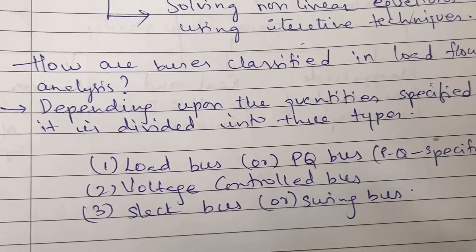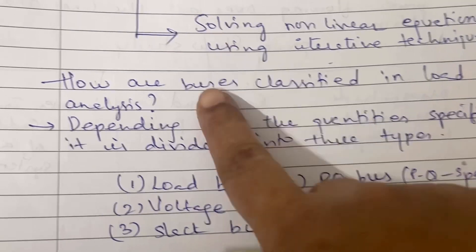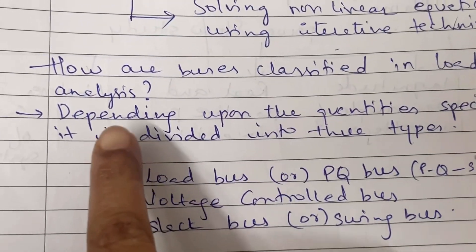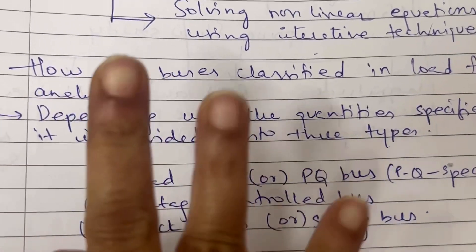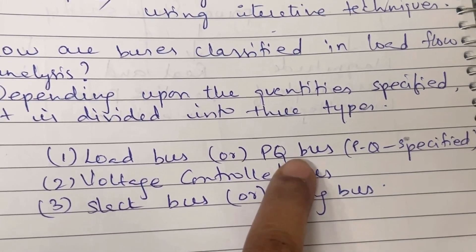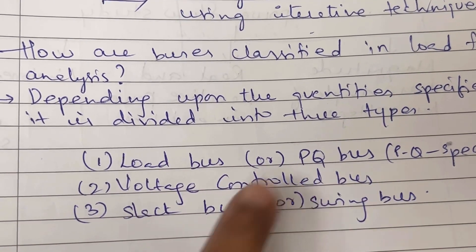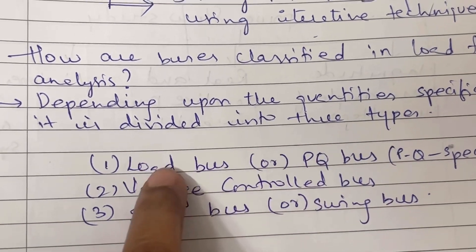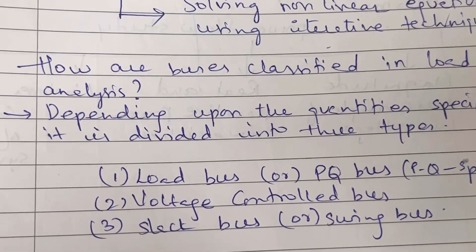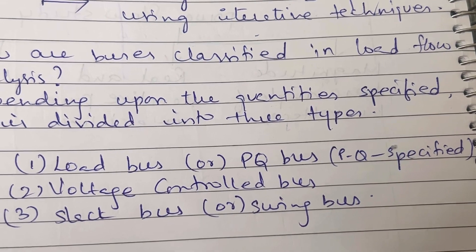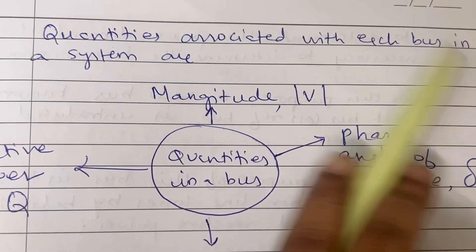Next, how are buses classified in load flow analysis? Since we get voltages and power at the buses, buses are classified into three types depending on the quantities: first is the load bus or PQ bus, where P and Q values are specified; second is the voltage controlled bus; and third is the slack bus or swing bus.